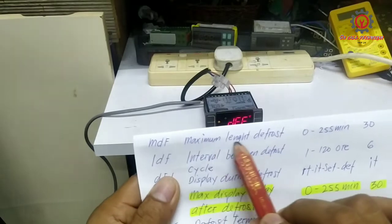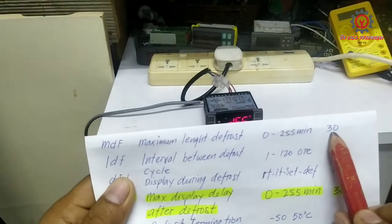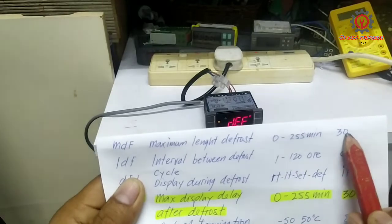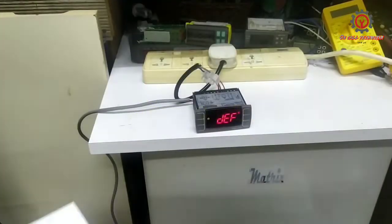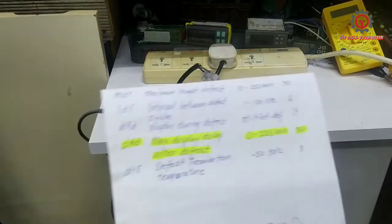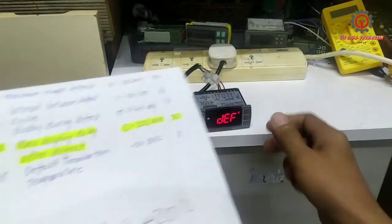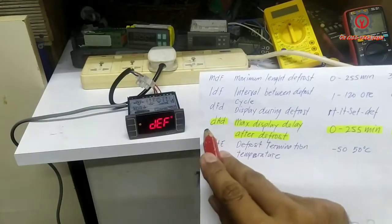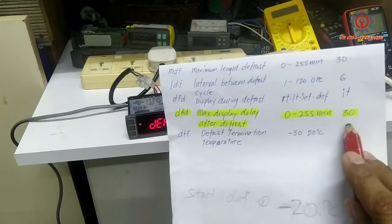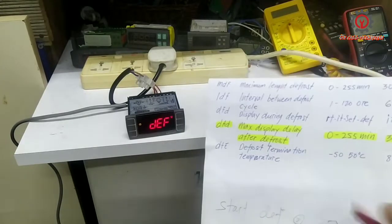Let's wait for 25 minutes because I set MDF maximum length of defrost to 25 minutes instead of 30 minutes. A few more minutes before the end of 25 minutes defrosting. If this DAD 30 minutes default is enough for delaying display of this digital control.